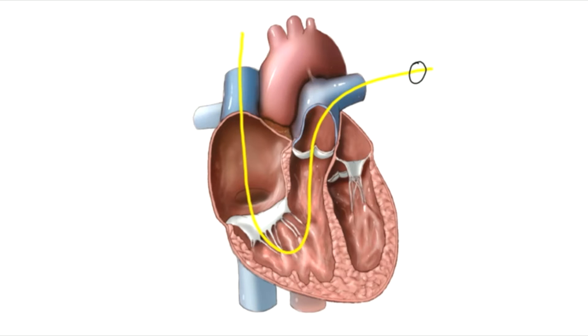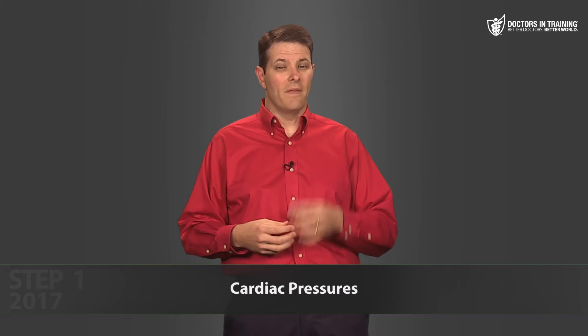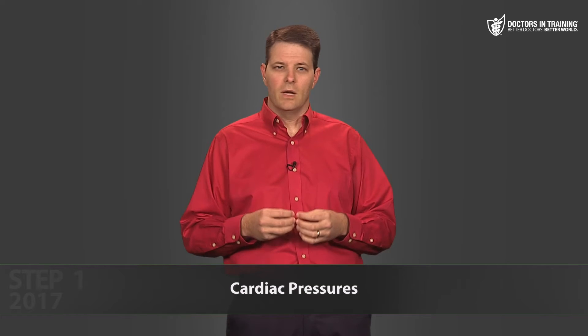The inflated balloon floats from the right atrium to the right ventricle and then into the pulmonary artery, continuing until it can't go any farther. At that point it has been wedged into one of the small branches of the pulmonary artery — that's what's called the pulmonary capillary wedge pressure.